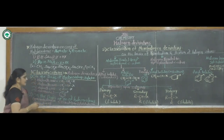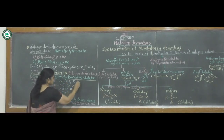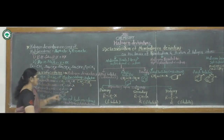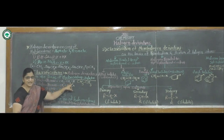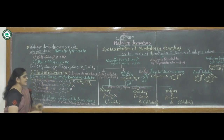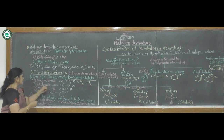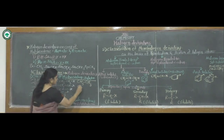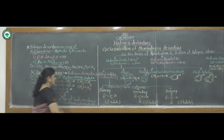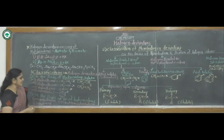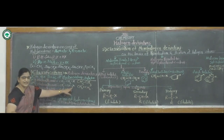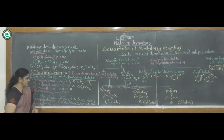In haloalkanes, the parent alkane is, for example, CH3CH3. One of the hydrogen atoms in this compound is replaced by a halogen atom, hence it is called haloalkane. In haloalkenes, the parent alkene is CH2=CH2. One of the hydrogen atoms is replaced by a halogen atom, hence it becomes a haloalkene.